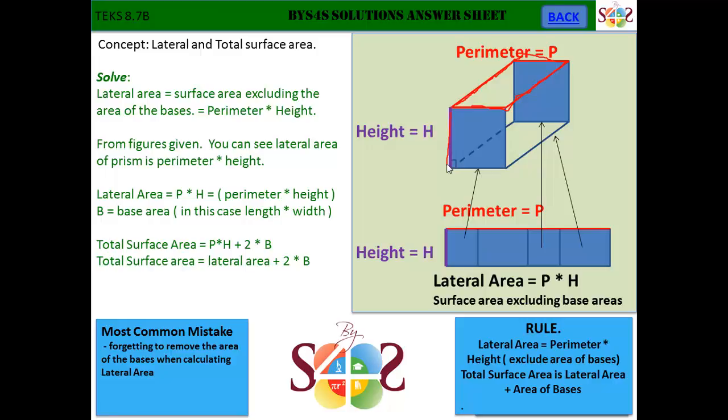The lateral area excludes the area of the base, whether in this case it's the top base or the bottom base. That area is excluded. It's just the lateral area that we're calculating.